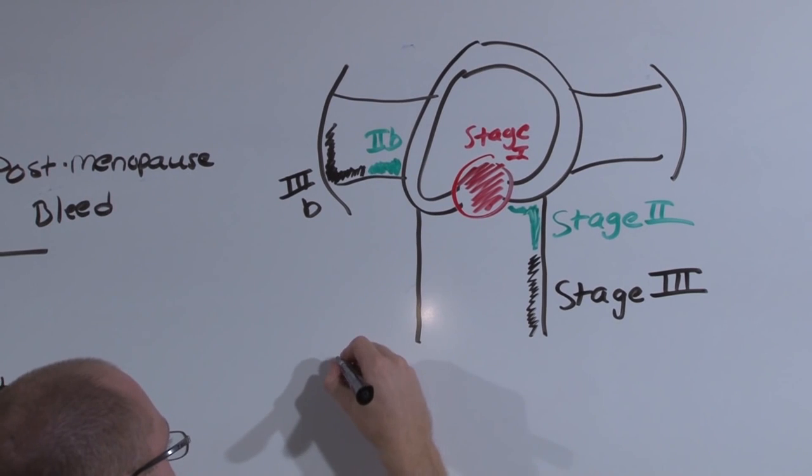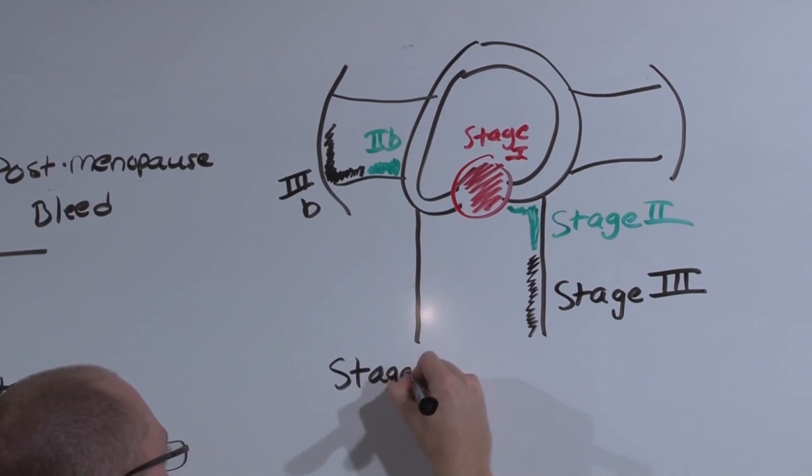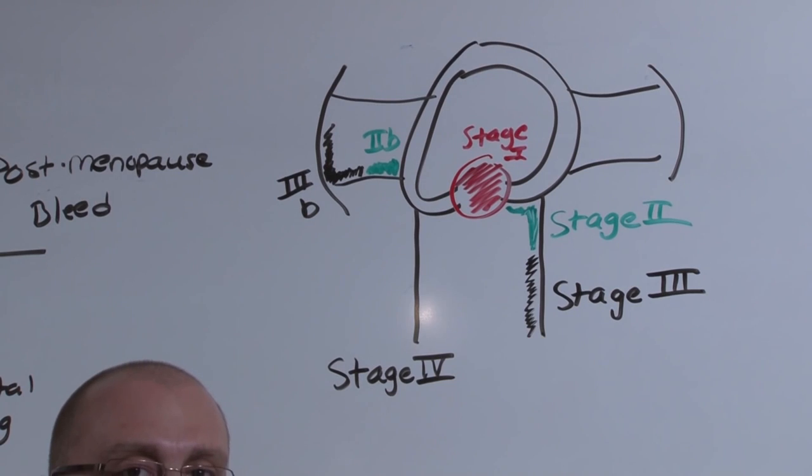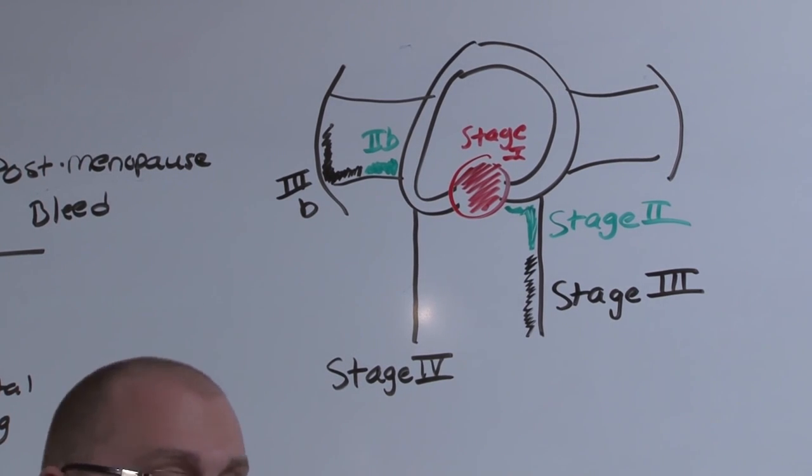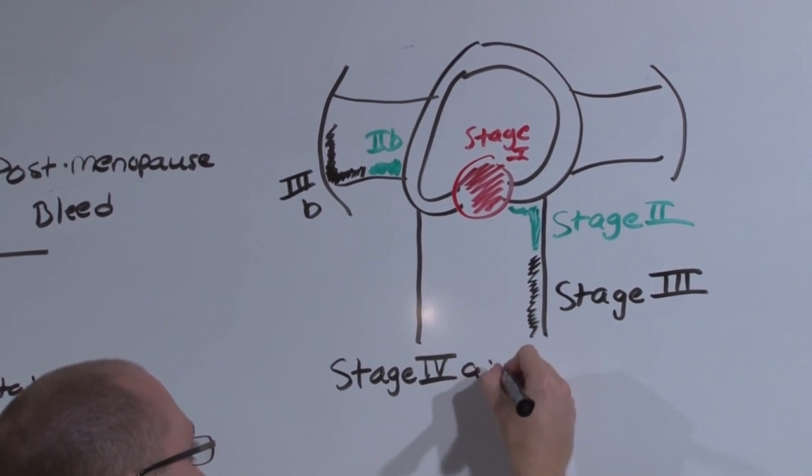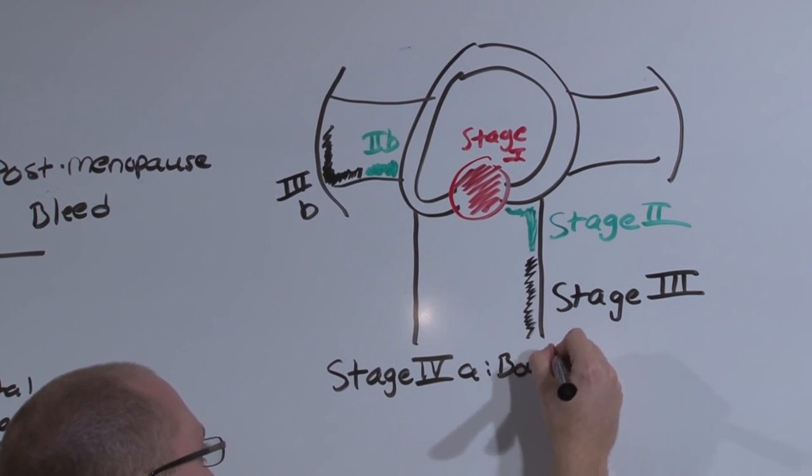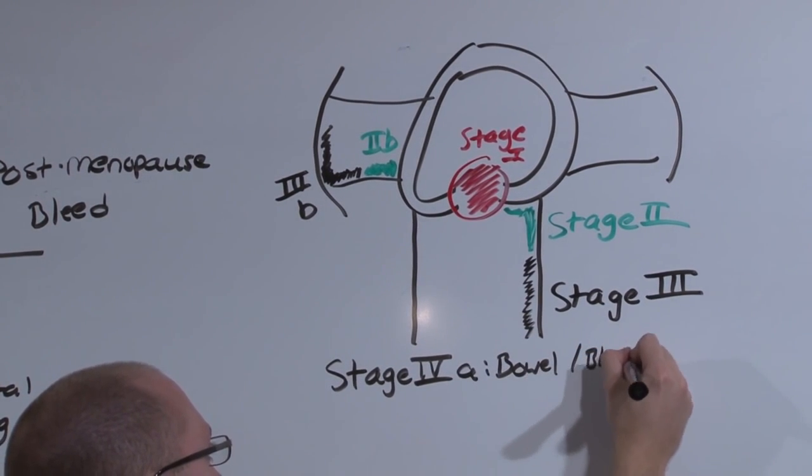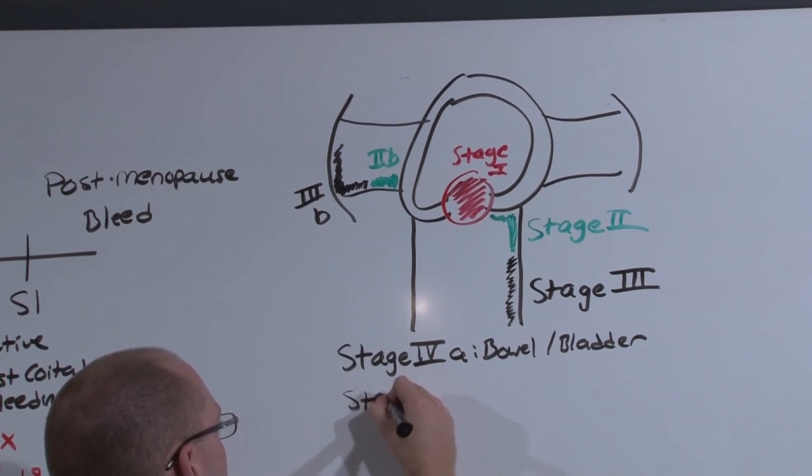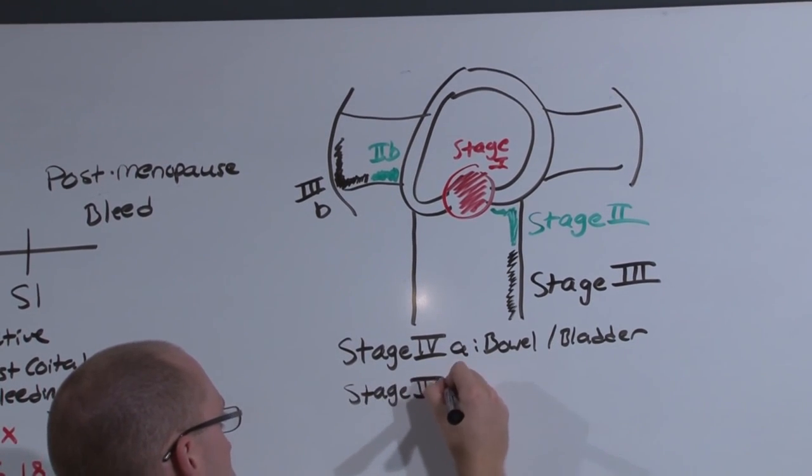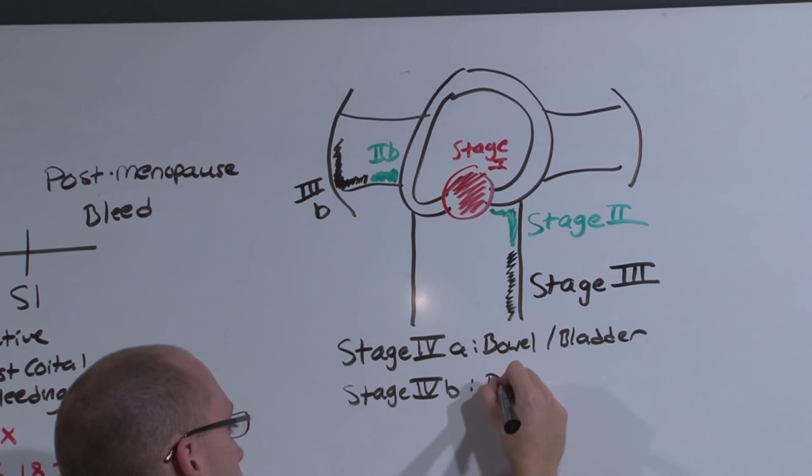Stage 4 is when it leaves the GYN organs and moves on to others. Stage 4A involves bowel or bladder, and the worst form, stage 4B, is distant metastasis.